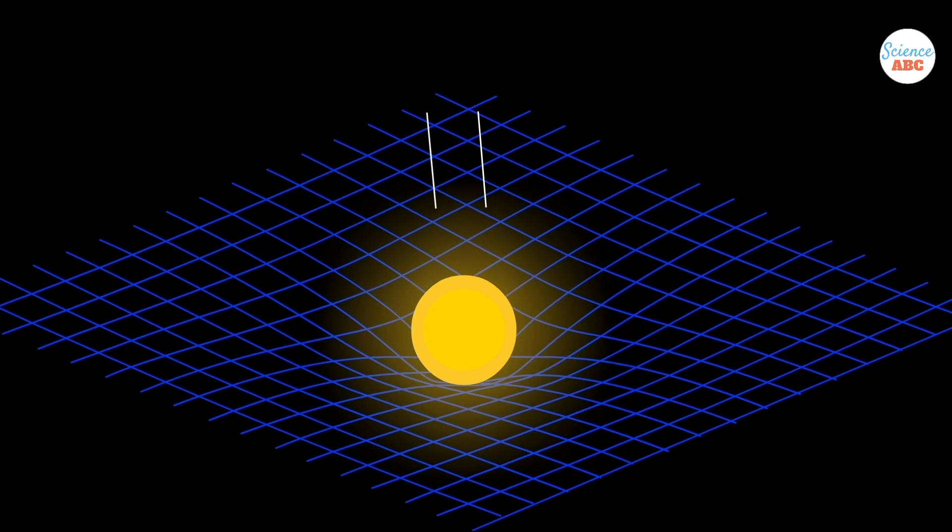That implies that gravity bends light waves, that is, makes their path curve around massive objects like stars, galaxies, or even black holes.